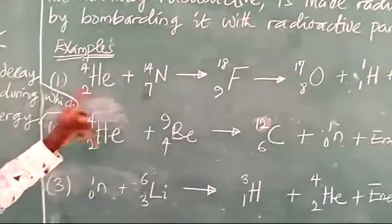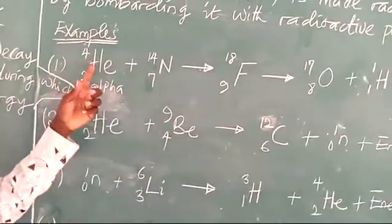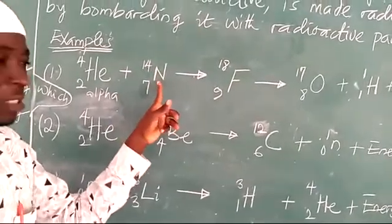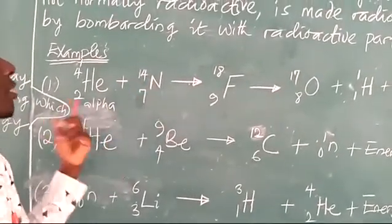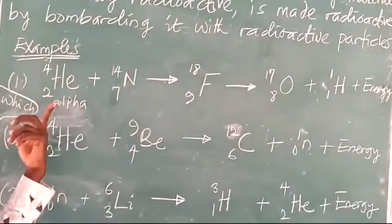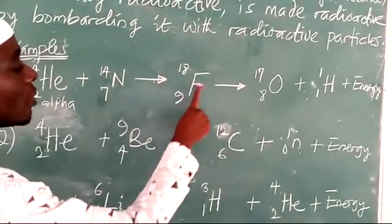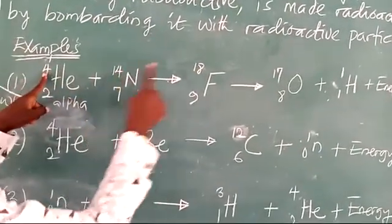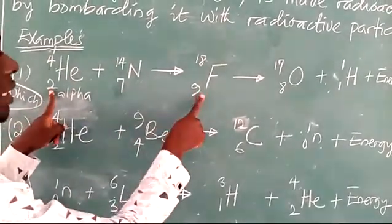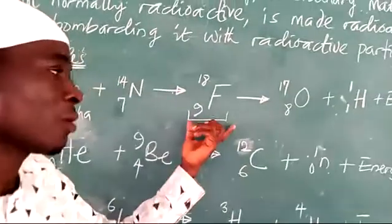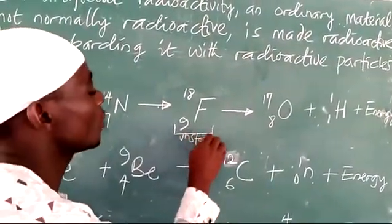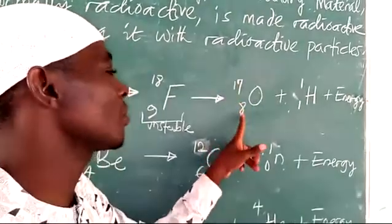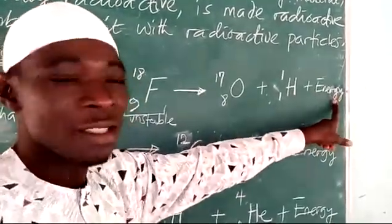Examples here: the first example is an alpha particle. A fast-moving alpha particle is used to bombard the atom of nitrogen-14. This isotope of nitrogen is being attacked by a stream of alpha particles. It yields a fluorine atom — this isotope of fluorine, fluorine-18. If you add 4 to 14, you have 18 here, and you add 2 to 7, you get 9. This isotope is unstable, so it splits and gives us the isotope of oxygen, which is oxygen-17 with a mass of 17, an atomic number of 8, and a proton, and then energy is released in the process.